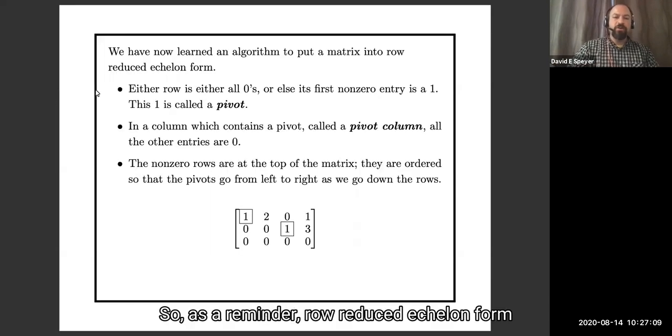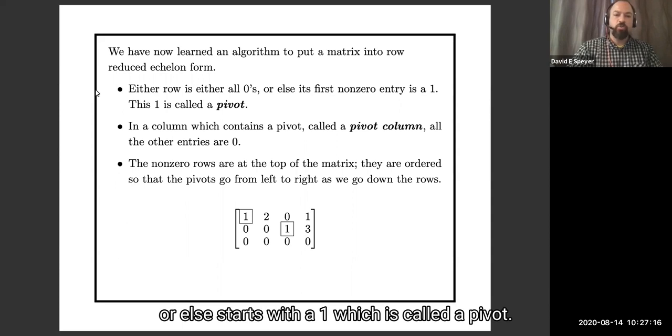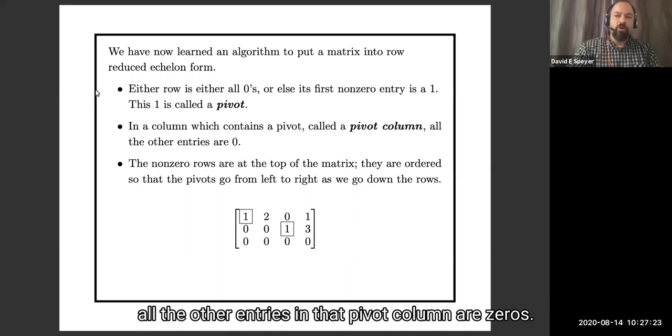So as a reminder, row reduced echelon form means that every row is either all zeros, or else starts with a one, which is called a pivot, that whenever you have a pivot, all the other entries in that pivot column are zero.